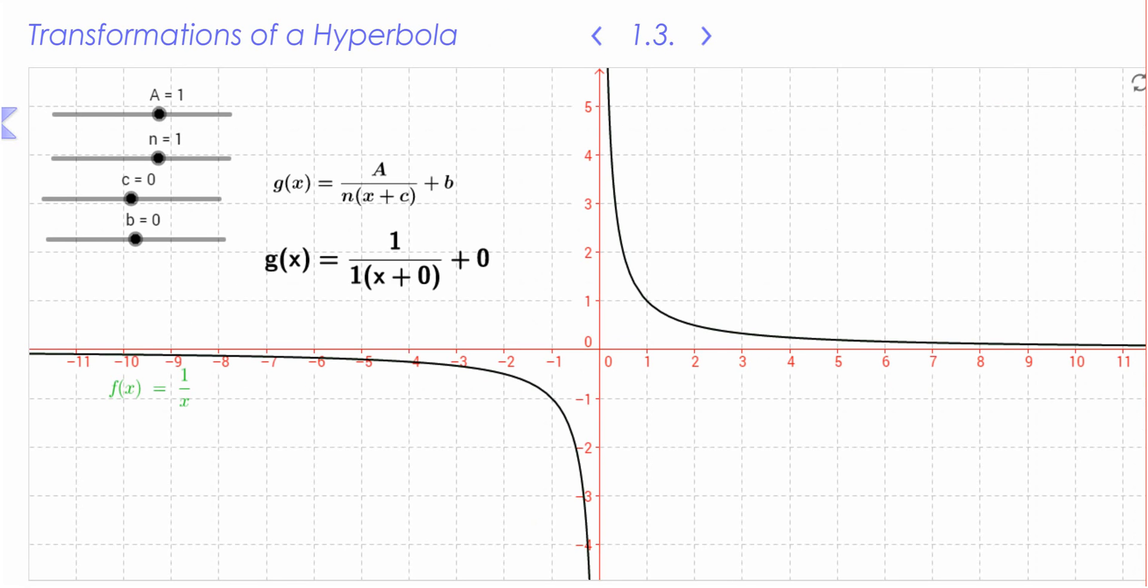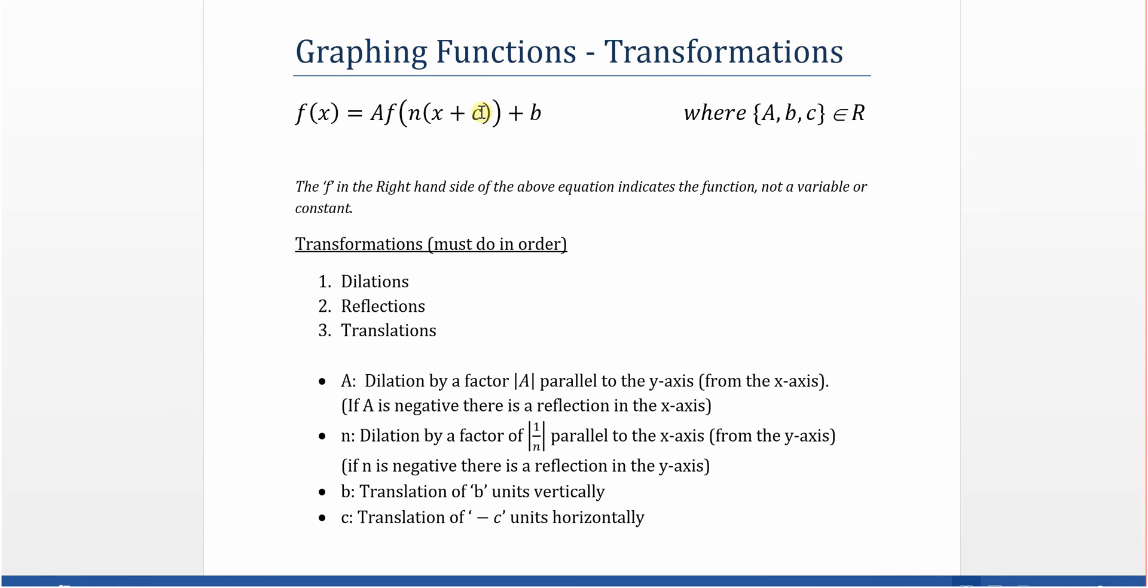So here we have a hyperbola. Just notice where the a, n, c and b are. If you can remember where they go, then you'll be able to sketch any graph. Really, you can just remember this here. So the f is not a variable that we can change—it's not transforming the graph. That's the type of function.